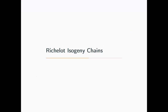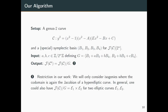Now I'll present the algorithm for computing a chain of Richelot isogenies. The motivation is to make something similar to the SIDH key exchange, but in genus 2. The algorithm starts with a hyperelliptic curve in Type 2 equation form, and we choose a special symplectic basis for the 2ⁿ-torsion.